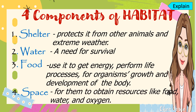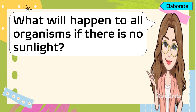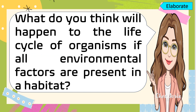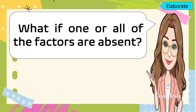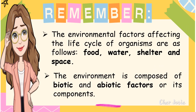The fourth component is space, where organisms can obtain resources like food, water, and oxygen. Based on our discussion, what will happen to all organisms if there is no sunlight? What will happen to the life cycle of organisms if all environmental factors are present in a habitat? What if one or all factors are absent? The environmental factors affecting the life cycle of organisms are food, water, shelter, and space. The environment is composed of biotic and abiotic factors.